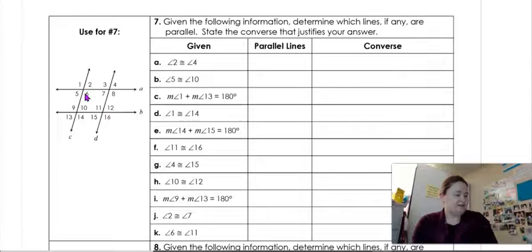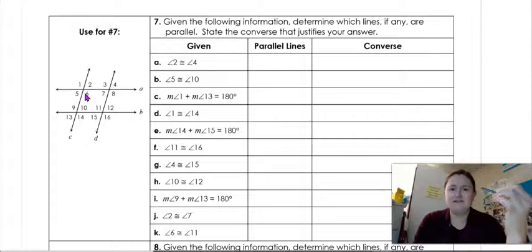But really all we're doing here is we're just looking at this picture over here, and you're answering, you're looking at these angles and determining, are they congruent, or do they add to 180? Is this even true? Would this make these parallel?